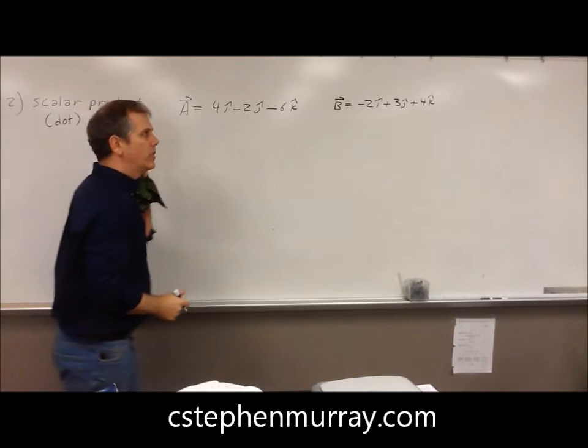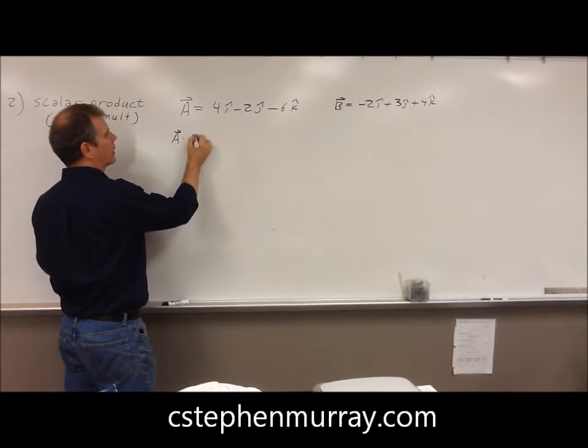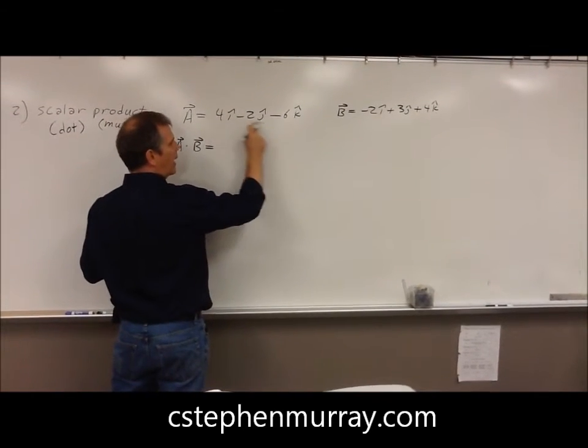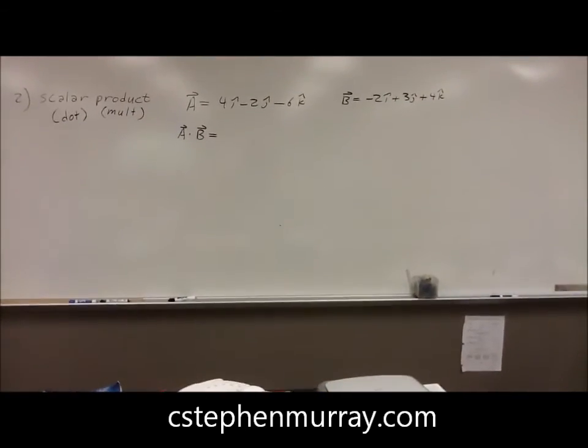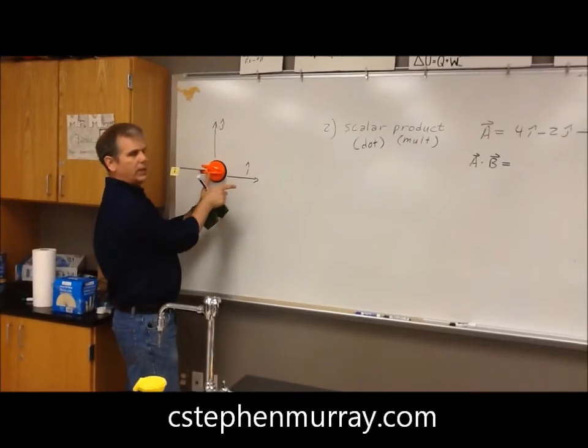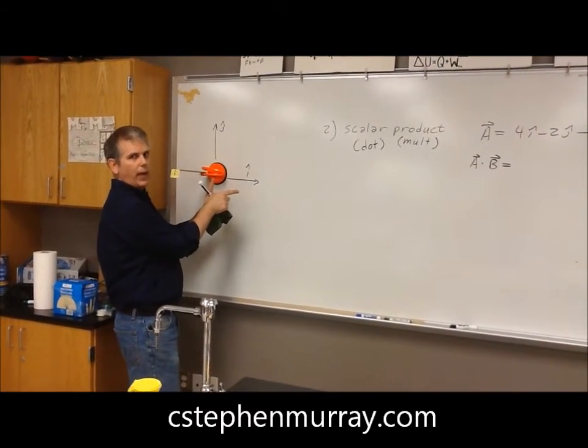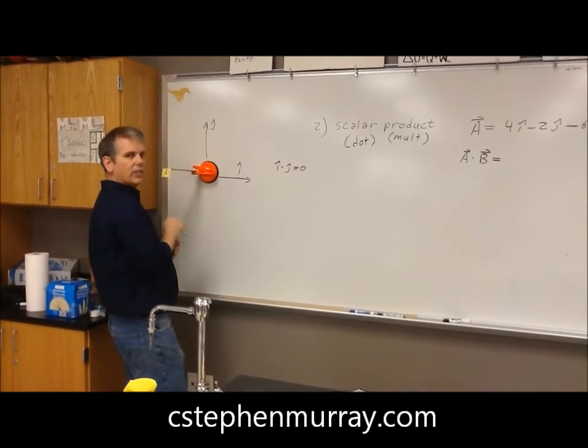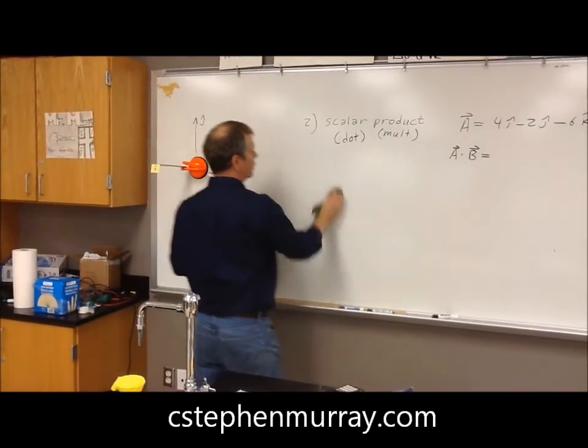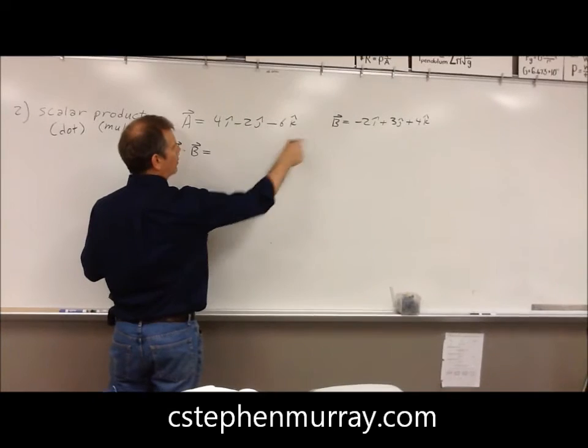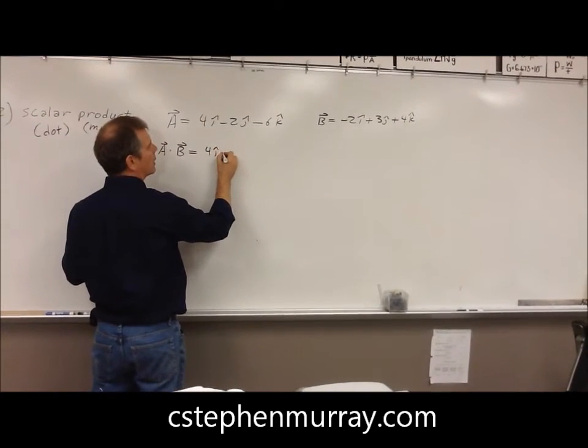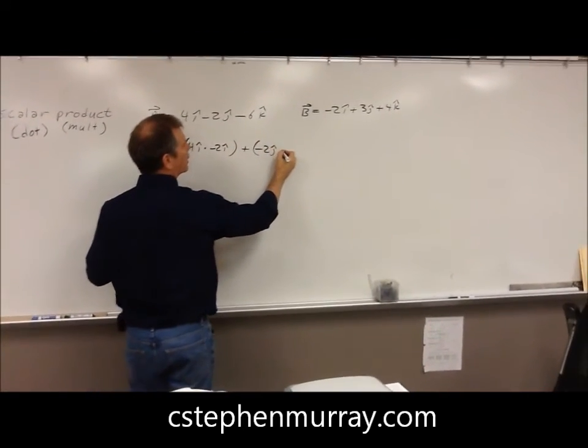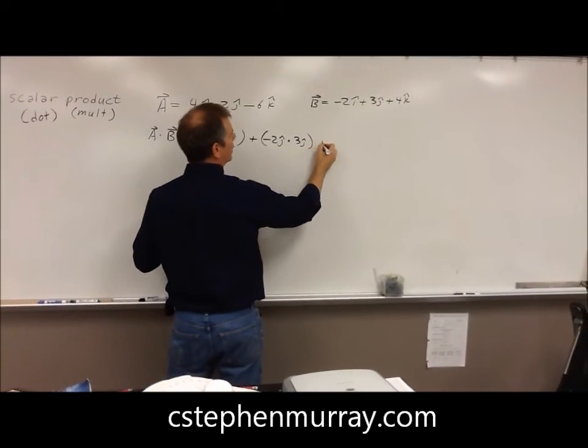I'm going to multiply those together as a dot product, written this way. I'm only going to multiply the parallel components. I'm not going to multiply i times j. Notice, i and j are perpendicular to one another. They are not parallel in any way. So i dot j equals zero. i dot k is also equal to zero.